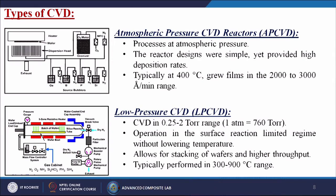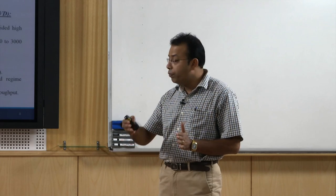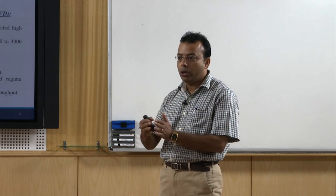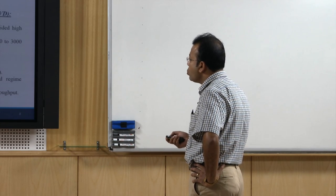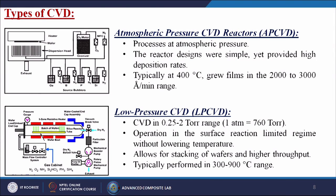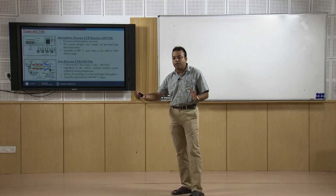Low pressure CVD (LPCVD) operates in the 0.25 to 2 torr range — since one atmospheric pressure is 760 torr, this corresponds to 0.25×760 to 2×760 torr range. Operations in the surface-reaction-limited regime without lowering temperature allows for stacking of wafers and higher throughput. LPCVD is typically performed in the 300 to 900 degree centigrade range, which provides a larger temperature variation compared to APCVD.